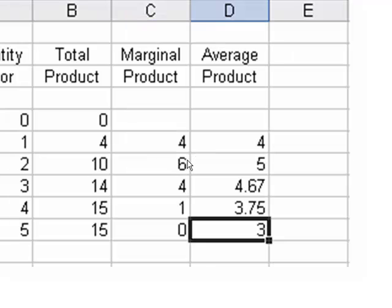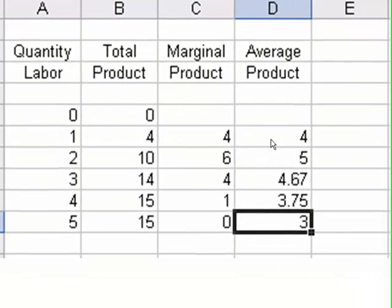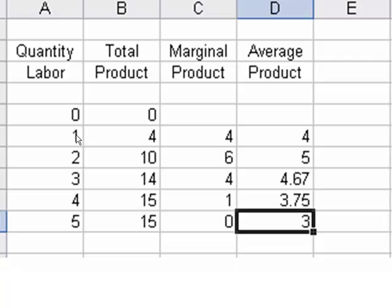I also like to calculate the average product. The advanced placement test sometimes has a question on this. So I simply took the total product, divided it by the quantity of labor. Thus, four divided by one was four. Ten divided by two was five.